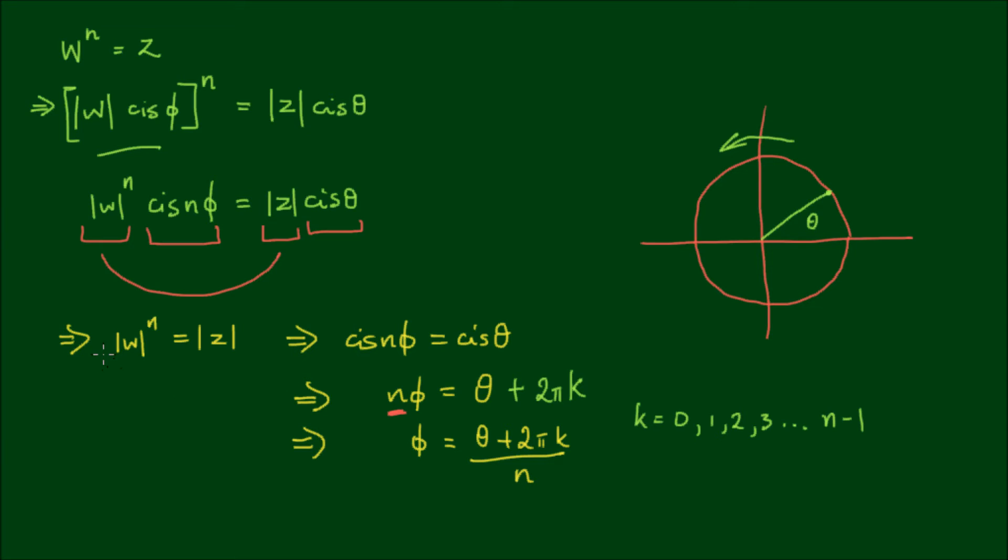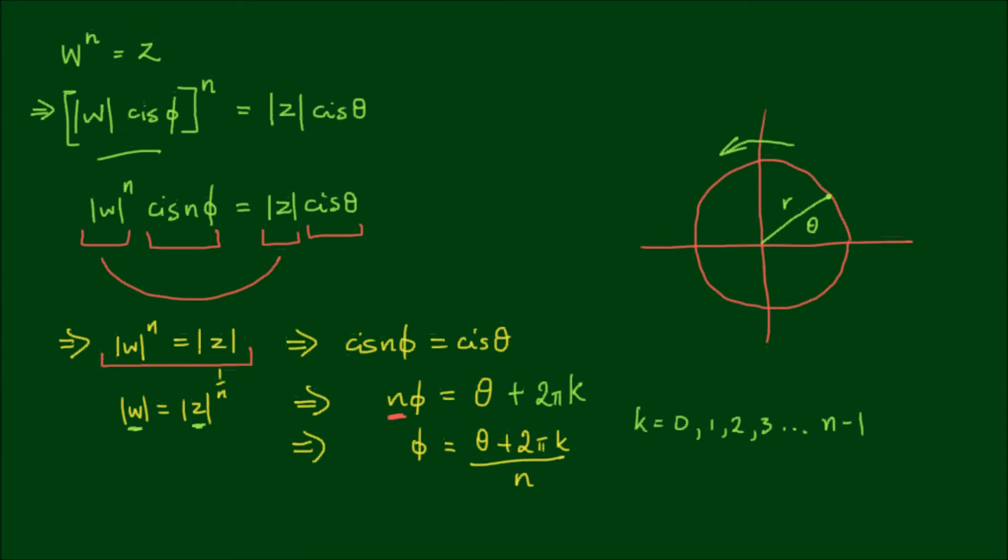For the first part of the equation, where |w|^n equals |z|, the solution is |w| equals |z|^(1/n). Both |w| and |z| are real numbers because they are concerned with the magnitude of the complex number—the length of the vector.